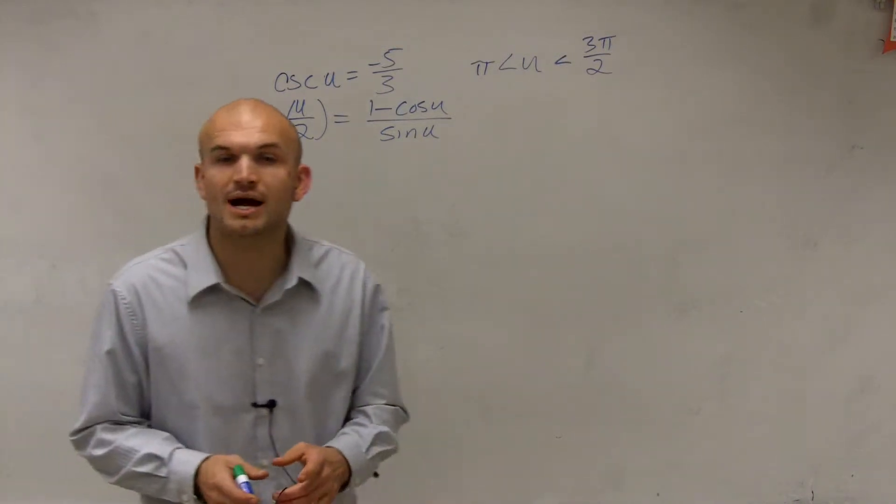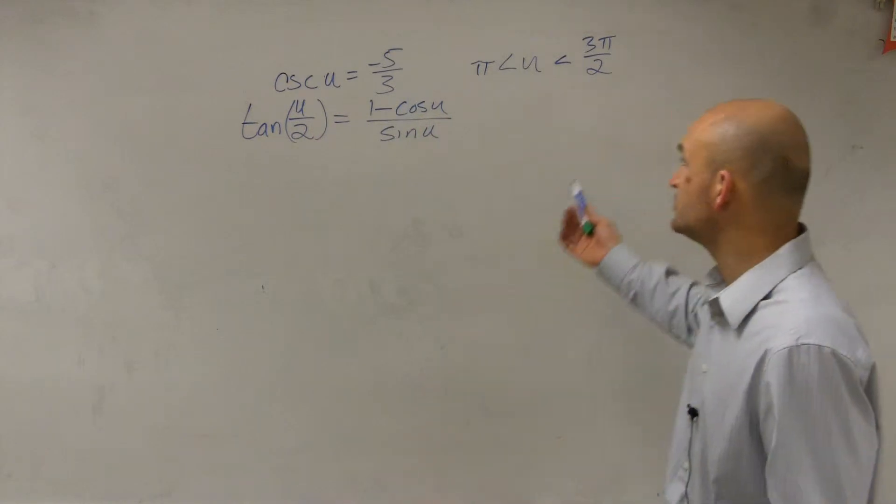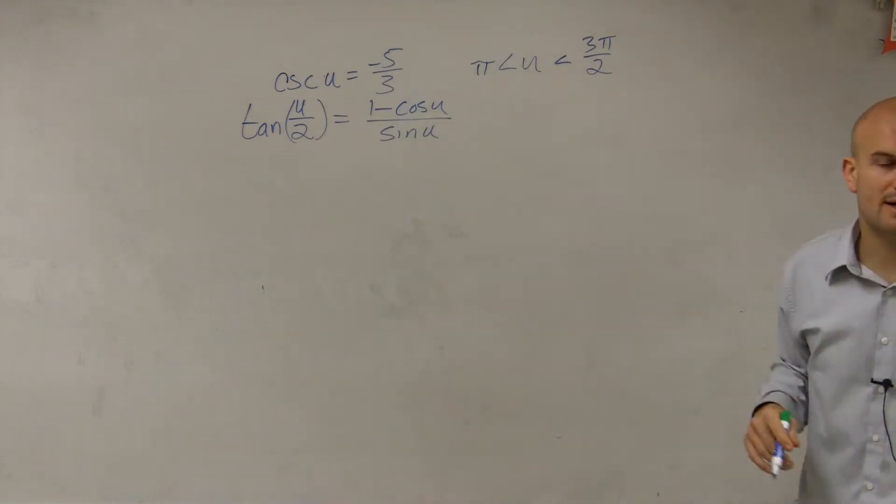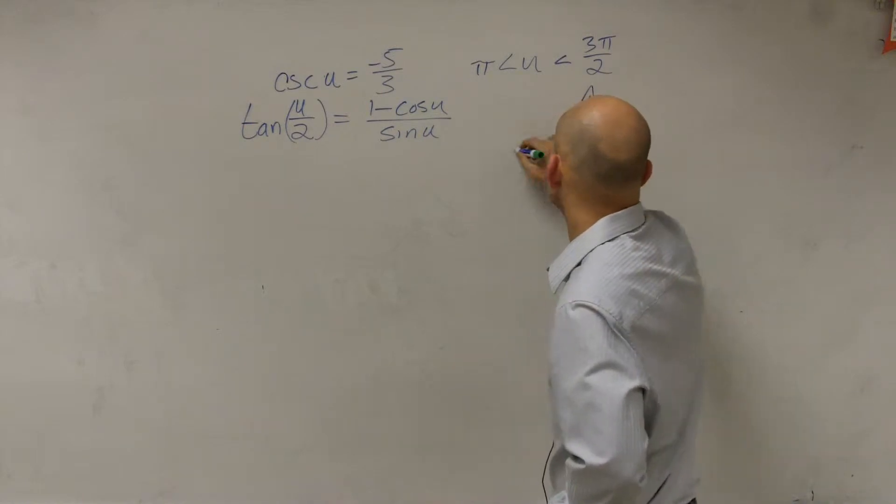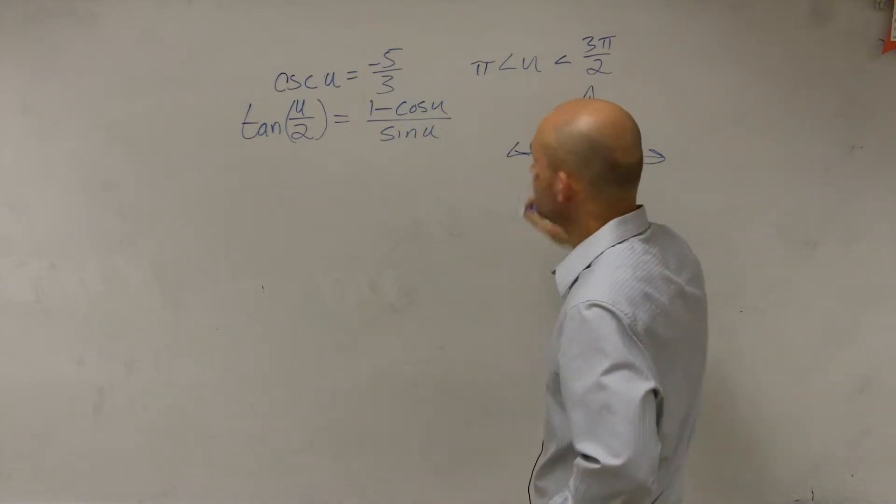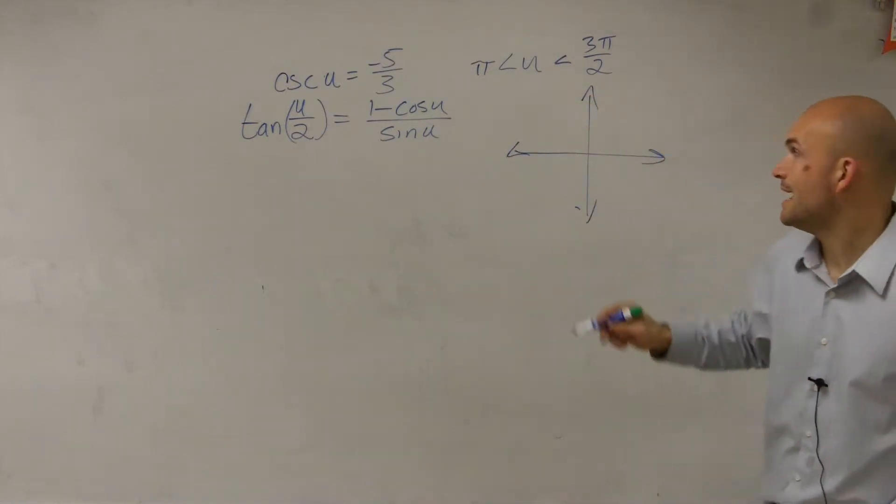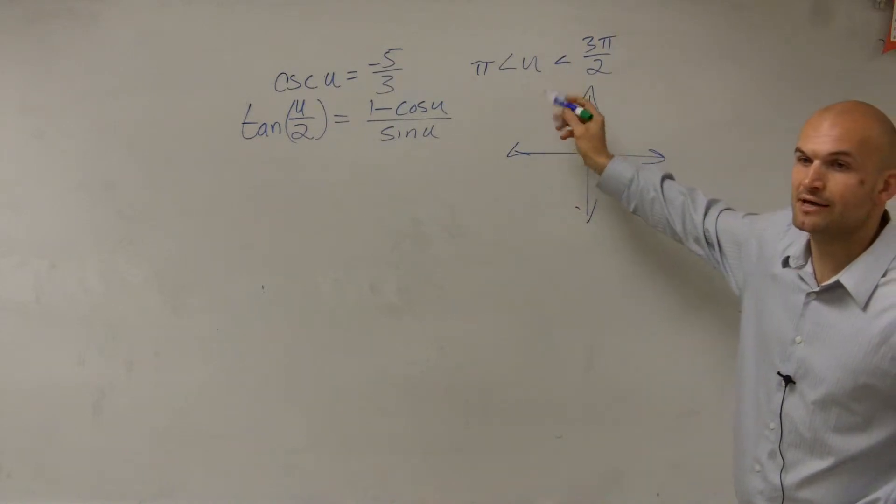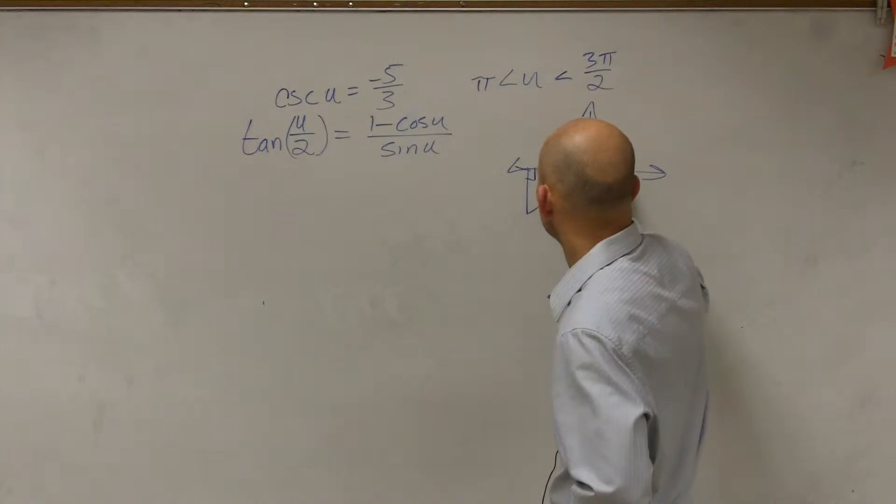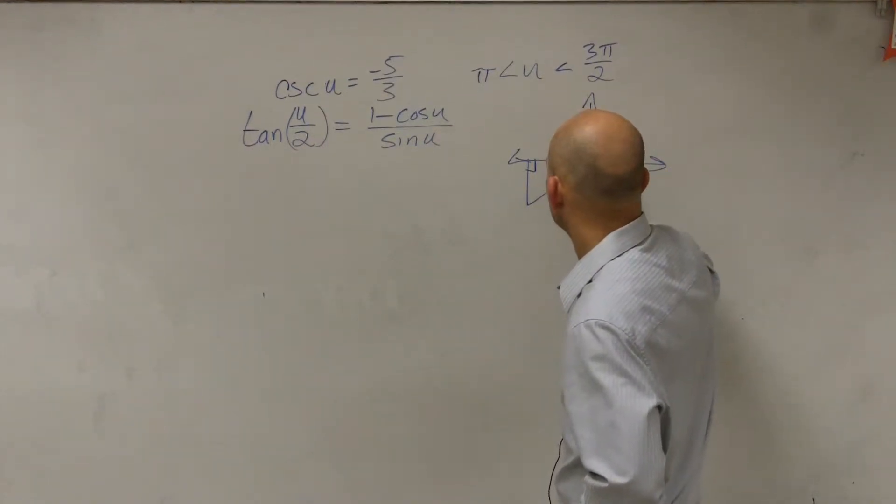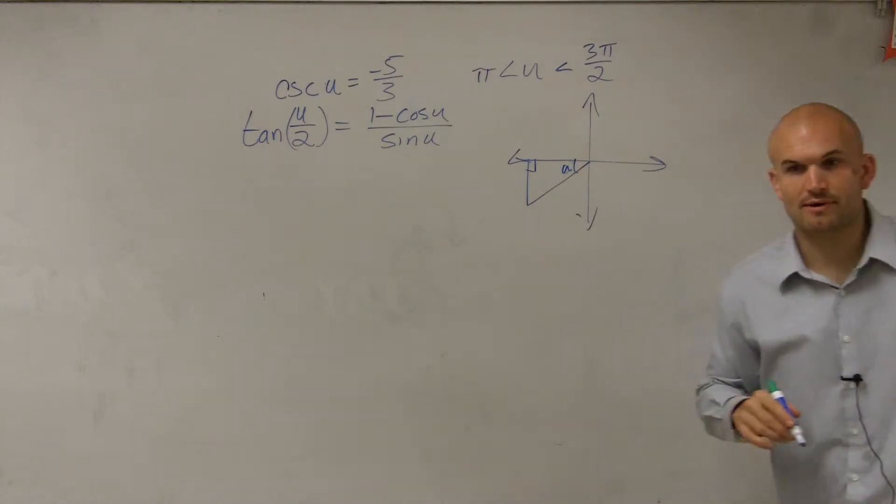So what we need to do is create a triangle. By using your constraints, we can go ahead and now construct the correct triangle. Let's write out a coordinate grid. We know that our angle has to be between π and 3π over 2. So my triangle is going to look something like this, where here's my theta or my angle u. And here's my right triangle, and here's my right angle.